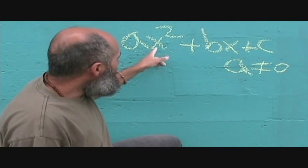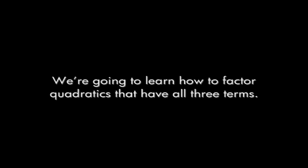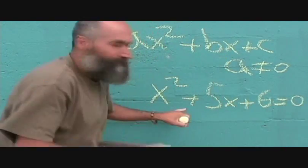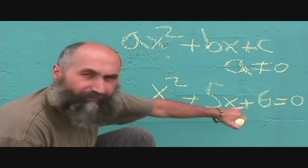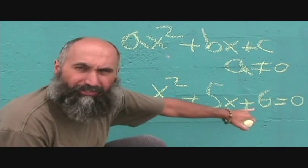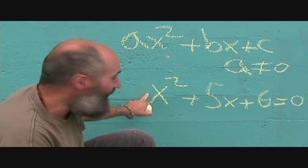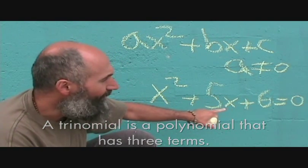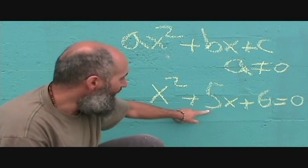We're going to talk about how to solve these quadratic equations using simple trinomials. For example, we'll have x squared plus five x plus six equals zero. This equation is in the standard form where a is equal to one. Whenever a is one, that's a simple trinomial. The method is quite simple: you look for two numbers that multiply to give you six and add to give you five, then break it up into two different pieces.